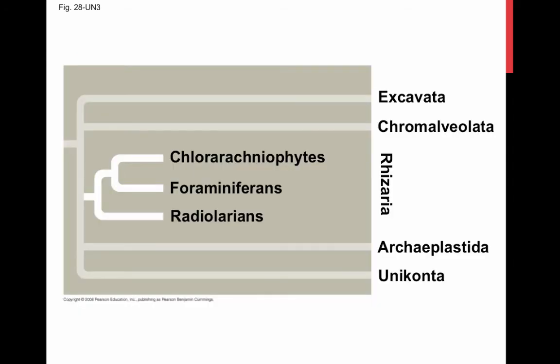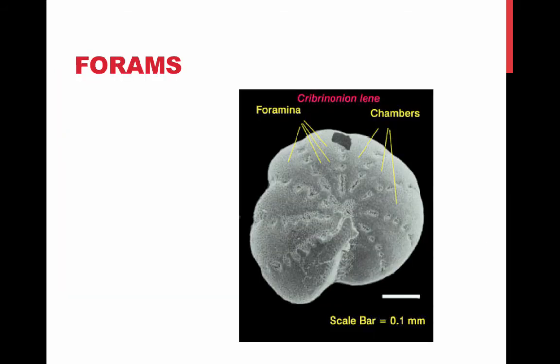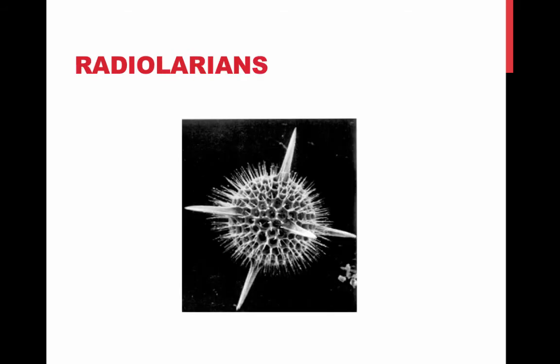Rhizarians are a diverse group of protists defined by their DNA similarities. This group includes forams and radiolarians. Forams are named for their porous, generally multi-chambered shells called tests. Pseudopodia extend through the pores in the test and help to move them along. Radiolarians use their pseudopodia to engulf microorganisms through phagocytosis.